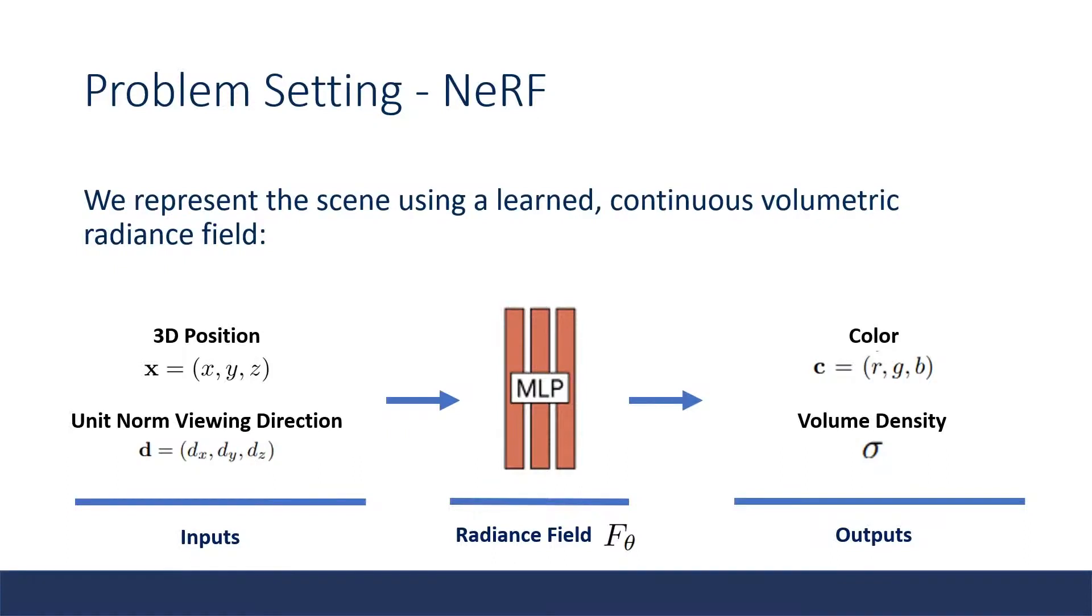We begin by discussing NeRF, the main model this paper, NeRF-W, builds off of. NeRF represents the scene using a learned continuous volumetric radiance field, which is modeled as an MLP. For a scene, NeRF takes in a 3D position and a unit norm viewing direction, and outputs a color and volume density. We can interpret the volume density as the probability of a particle occupying that space.